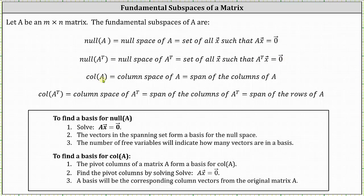The column space of A, which is equal to the span of the columns of A, and the column space of A transpose, which is equal to the span of the columns of A transpose. This is also equal to the span of the rows of A, or the row space of A.